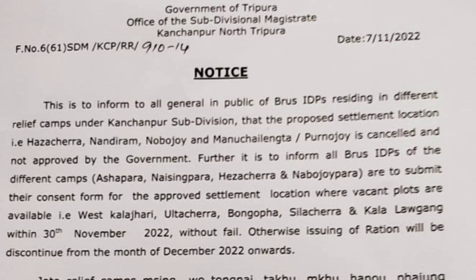Further, it is to inform all BRUIDP of the different camps — Asapara, Naisingpara, Hazar Chera, and Nabojoe — to submit their consent form for the approved settlement location where vacant plots are available.